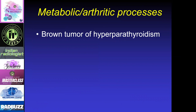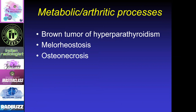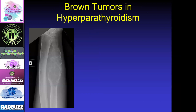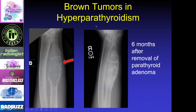Moving on to metabolic and arthritic processes — we're going to talk about brown tumors seen in hyperparathyroidism, melorheostosis, osteonecrosis, Paget's disease, calcific tendonitis, and subchondral cysts. Brown tumors occur in hyperparathyroidism and can look really aggressive — they could look just like a renal cell or lung cancer metastasis. The good thing is if you treat and remove the parathyroid adenoma, these will usually go away or improve. In this case, the parathyroid adenoma was removed, and we can see increased sclerosis and healing of the lesion after six months.